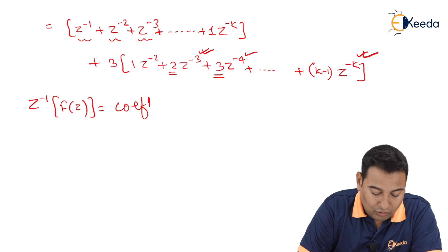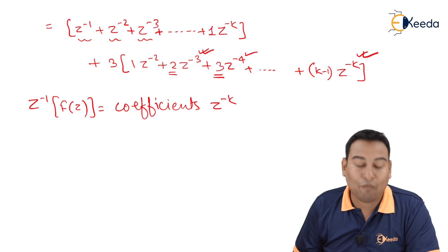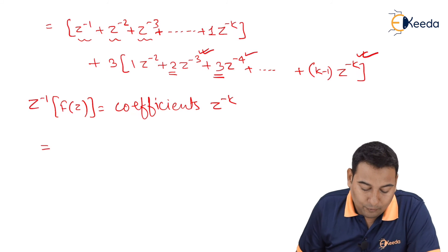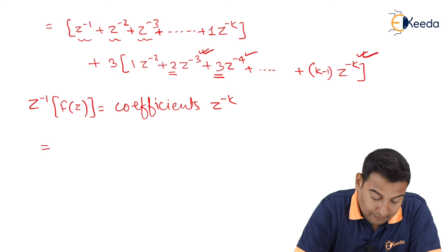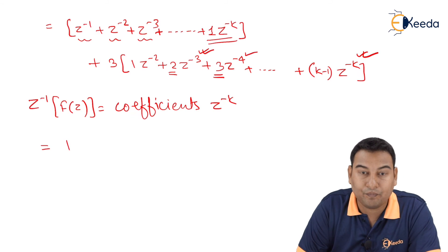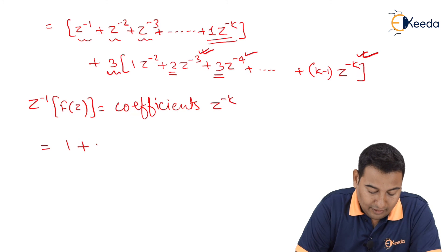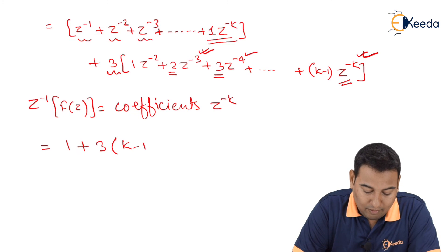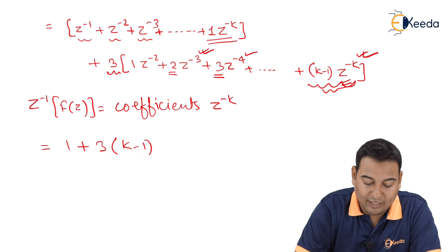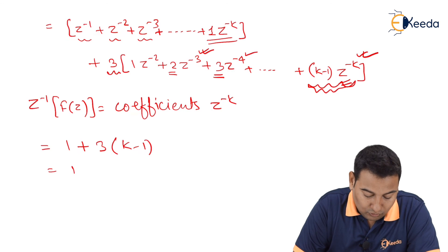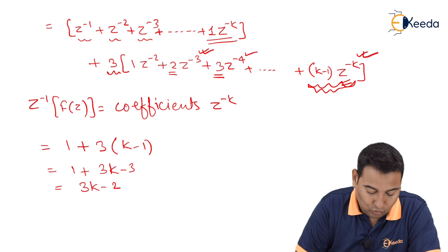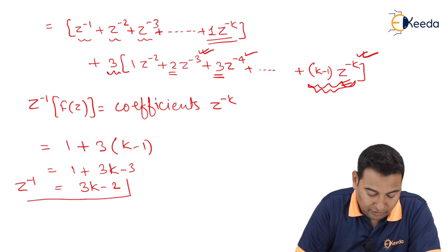Therefore the inverse z-transform of f(z) equals the coefficient of z^(-k): 1 + 3·(k-1) = 1 + 3k - 3 = 3k - 2. So the final answer is: Z^(-1){F(z)} = 3k - 2.